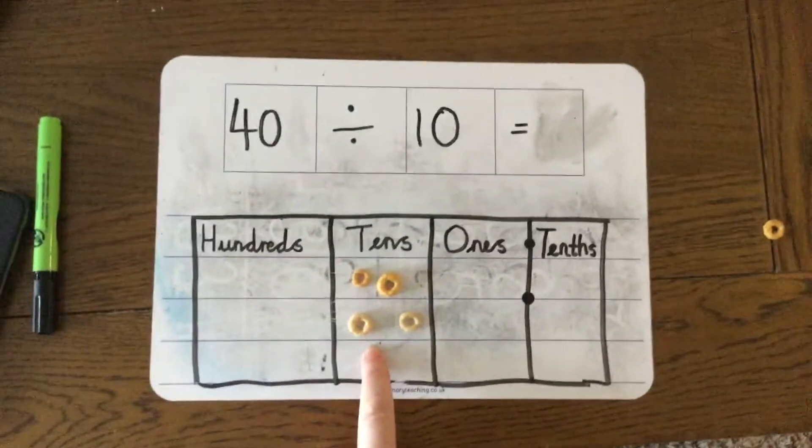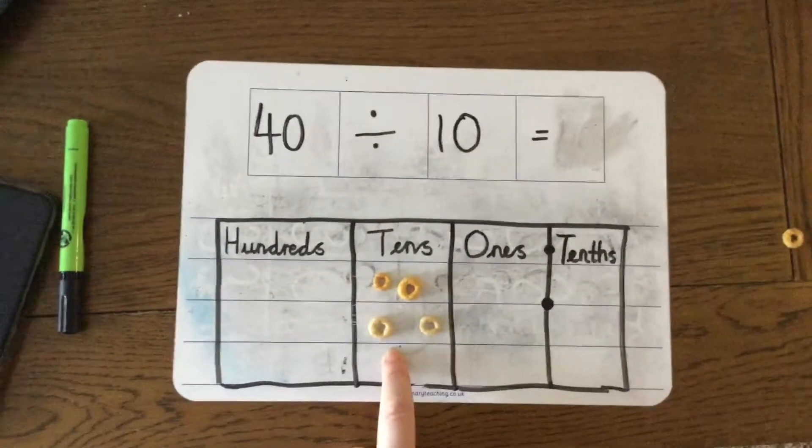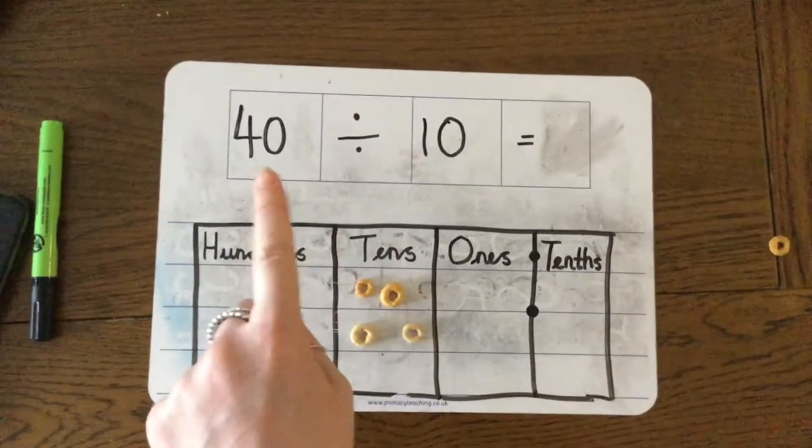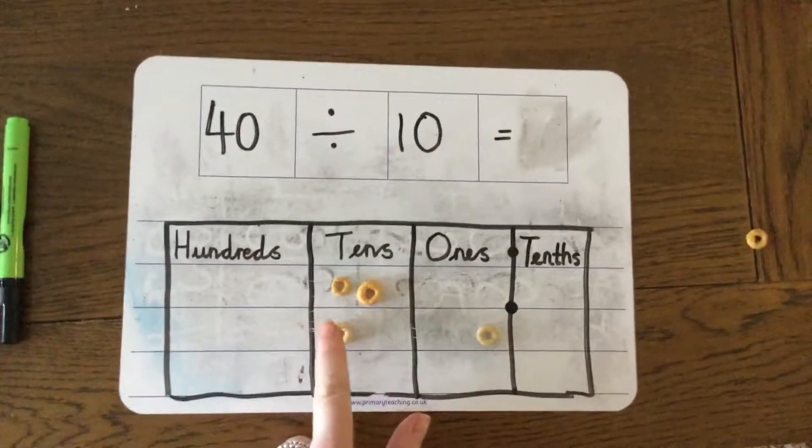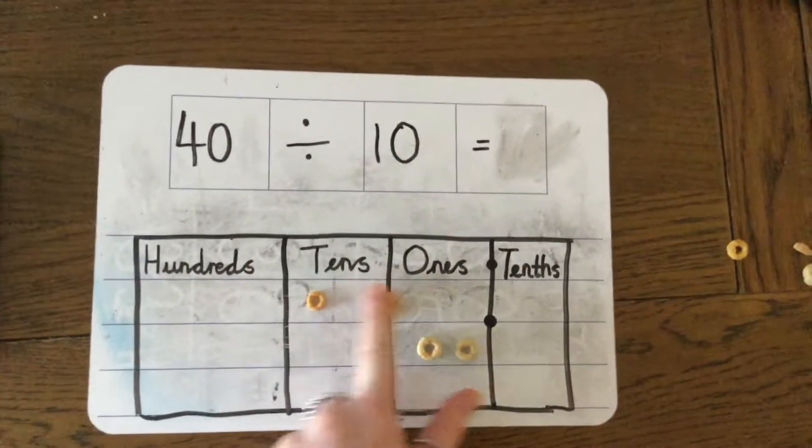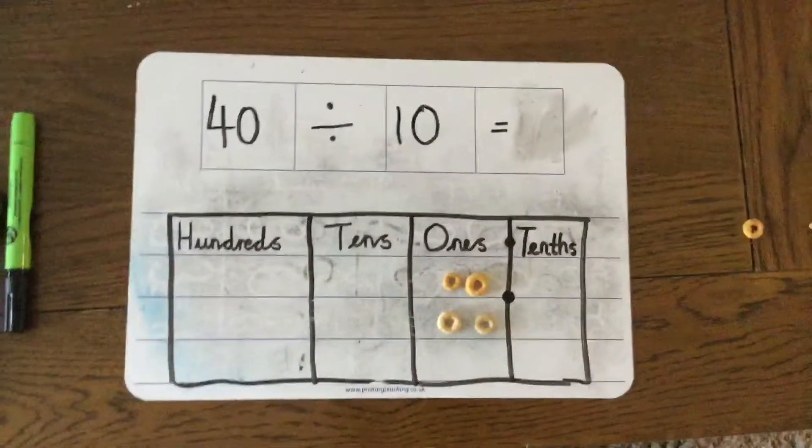Now when we divide by 10, we're taking a step to the right on our place value chart. So 40 divided by 10 means the place value of our digit 4 changes from 4 tens to 4 ones.